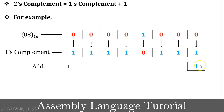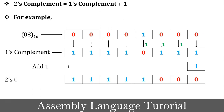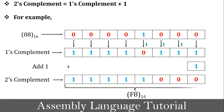Adding 1: the rightmost 1 plus 1 equals 0 with carry 1; next 1 plus 1 equals 0 with carry 1; next 1 plus 1 equals 0 with carry 1; then 1 plus 0 equals 1 with no carry, and all remaining bits stay as 1. So the 2's complement value in binary converts to hexadecimal as F8.